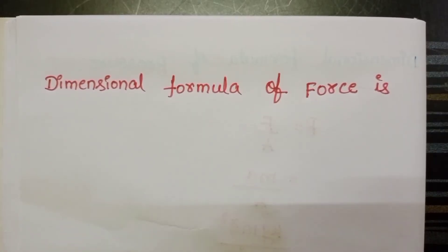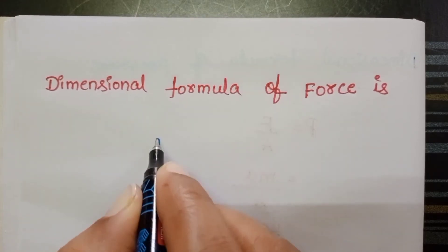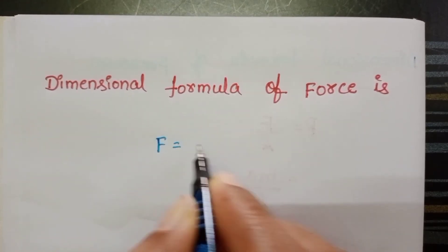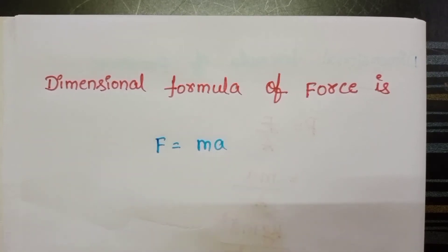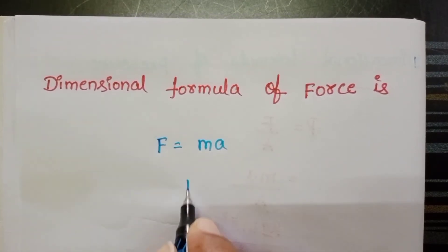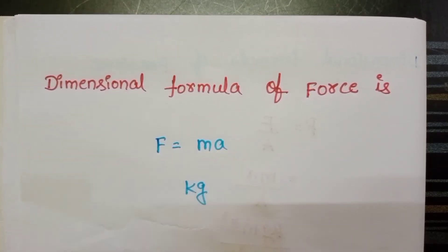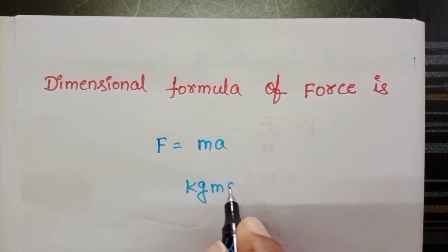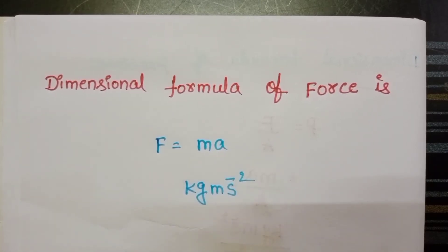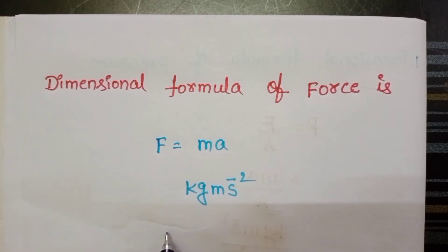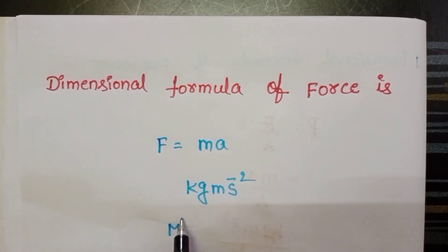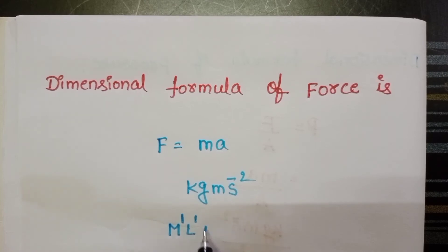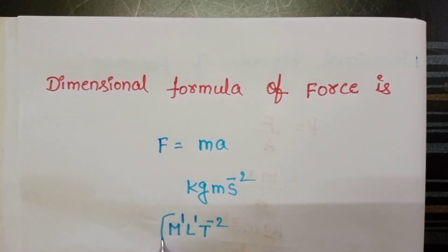The dimensional formula of force. Force is equal to mass into acceleration. The SI unit of mass is kg and acceleration is meter per second squared. So the dimensional formula of force is M¹L¹T⁻².